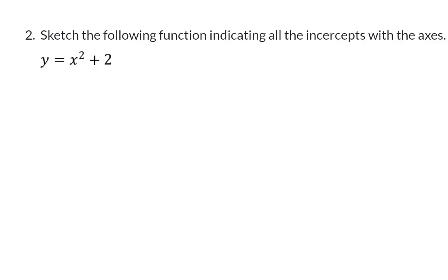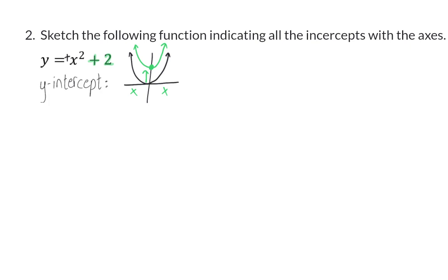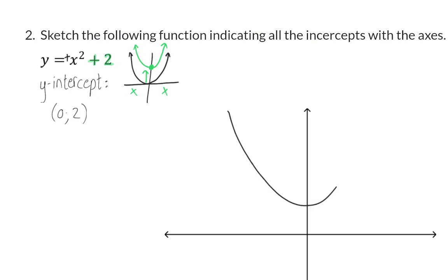In example two we again start by getting a rough idea of the sketch. We have a happy face parabola indicated by the positive a value. The plus two indicates this graph moves up two units. From this we can see the graph will intersect the y-axis but will have no x-intercepts. The y-intercept is at zero two, and this is also the turning point. The axis of symmetry is the line x equals zero.